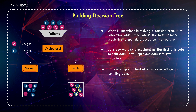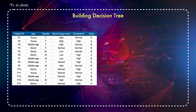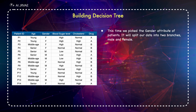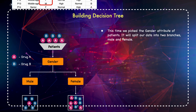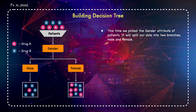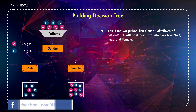Let's try another attribute. Again, we have about 14 cases. This time we pick the gender attribute of the patient. It will split our data into two branches — male and female. As you can see, if the patient is male, we can say drug B might be suitable for him with high certainty. But if the patient is female, we don't have sufficient evidence or information to determine if drug A or B is suitable.